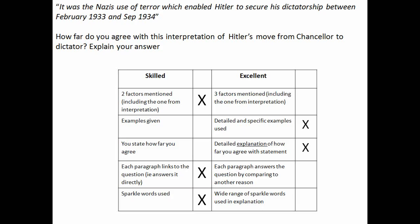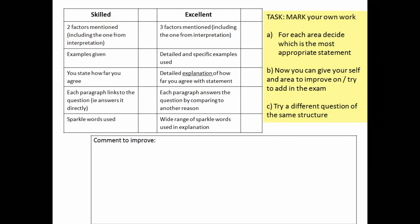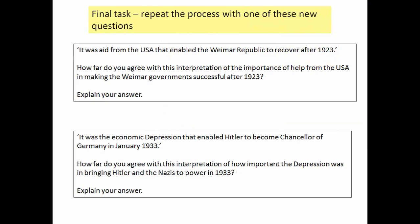Now take the criteria in front of you and actually mark your own answer. You should now have a really clear idea about the ways in which you might improve. You know the process, and it gives you one last chance to practice before the exam. Have a quick look at these two questions, choose one of them, and run through the whole process again — plan it, write it, and then mark it yourself. That's excellent practice for your 2c and 3c questions. Well done and best of luck with the rest!